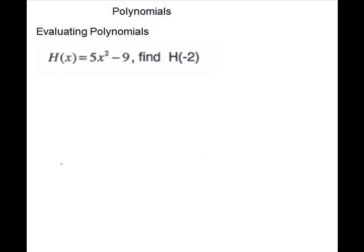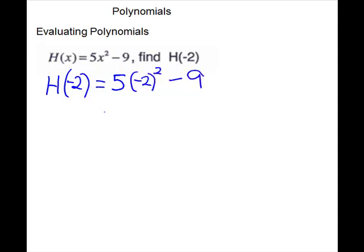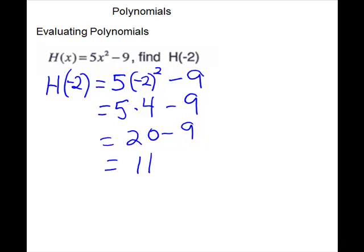We have one more to do. We have h of x equals 5x squared minus 9, and we want to evaluate the polynomial h at x equals negative 2. So we plug negative 2 into the x. You have to be very careful here and are required to use parentheses with that exponent because you're plugging in a negative. So we have 5 times negative 2 to the second power minus 9. Do your exponent first: negative 2 times negative 2 gives you a positive 4. Then do multiplication, and last subtraction: 20 minus 9 gives us 11. If you're substituting a negative, you have to put parentheses if it's going to a power.